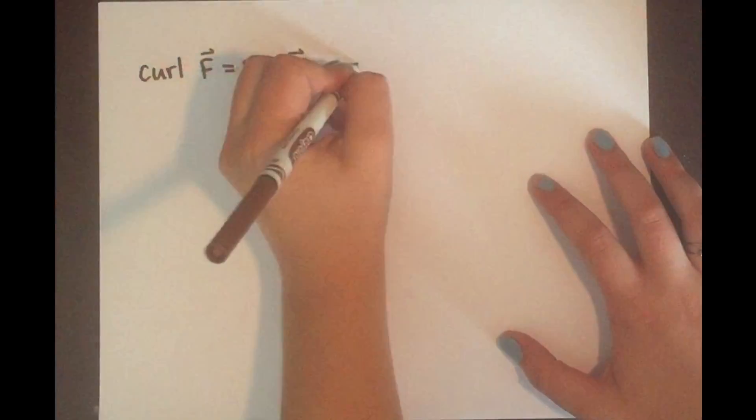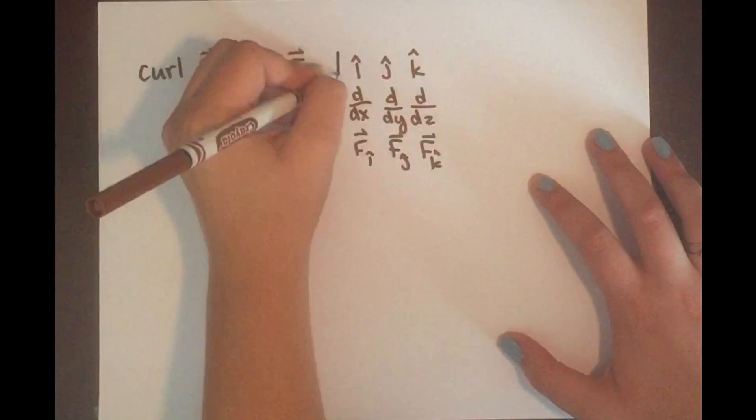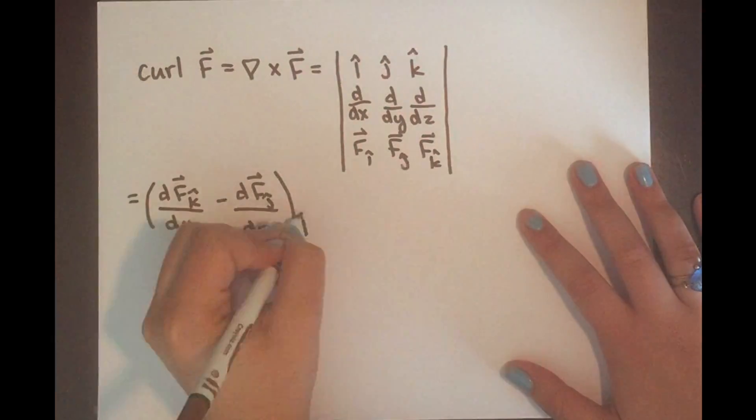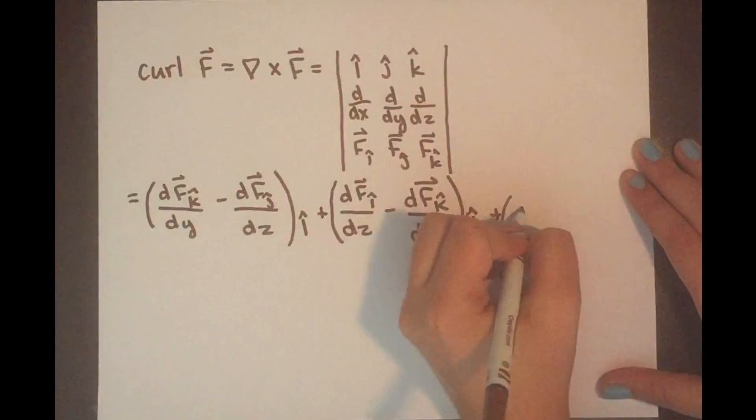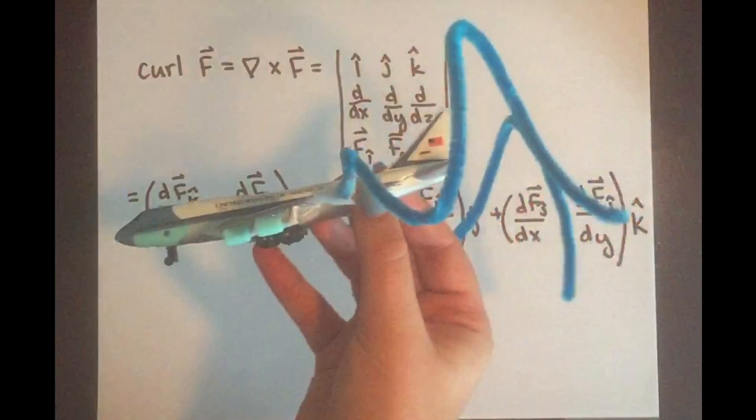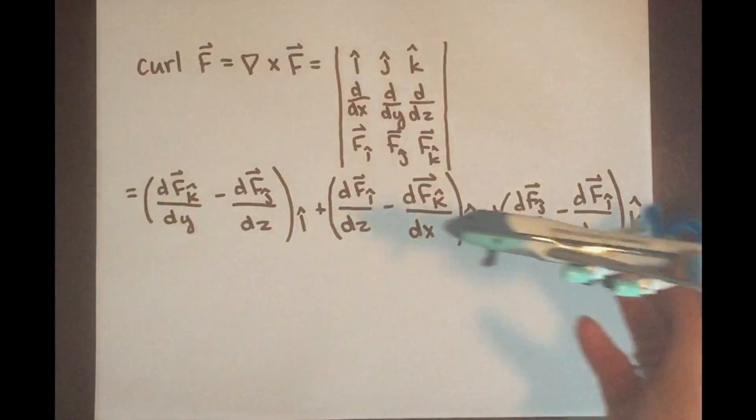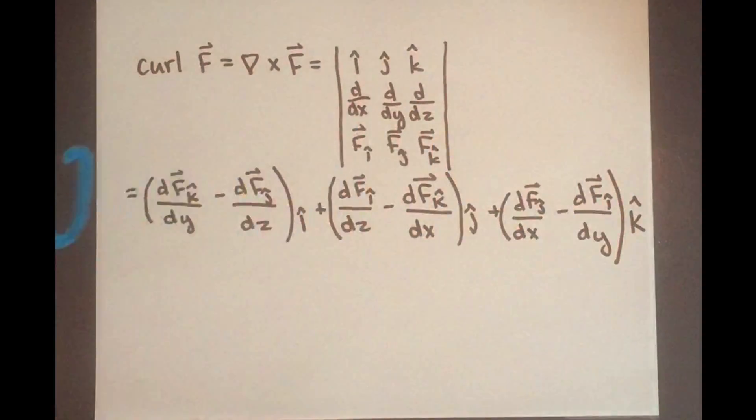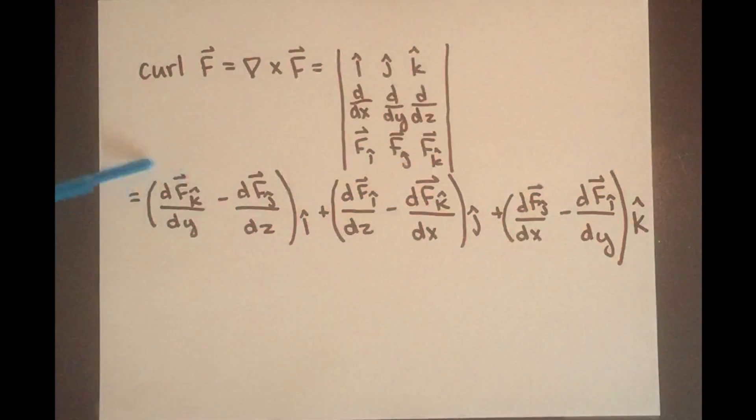We can take the curl of this function that represents the path taken by an air particle in the vortex by finding the cross product of the gradient and the function. If the vorticity is large, it will look like this. If the vorticity is small, it will look like this. If the vorticity is equal to zero, there will be no vortex.